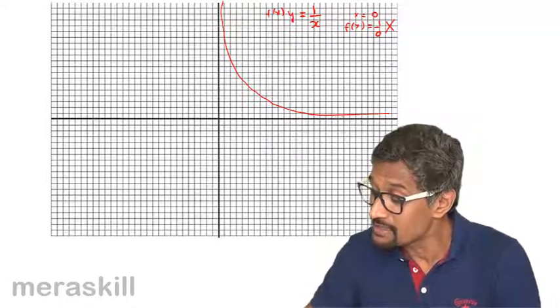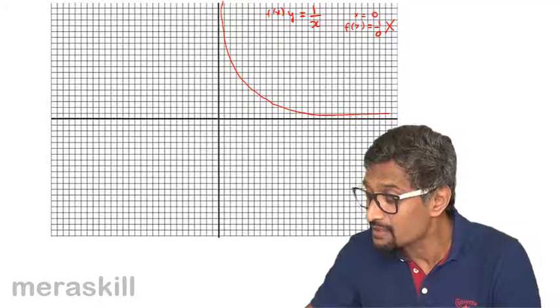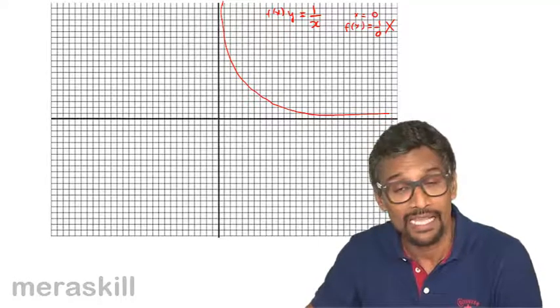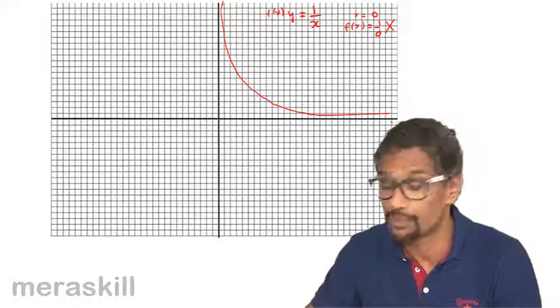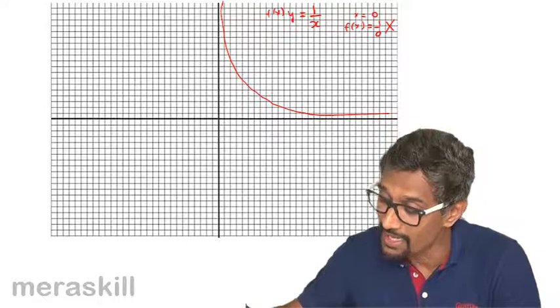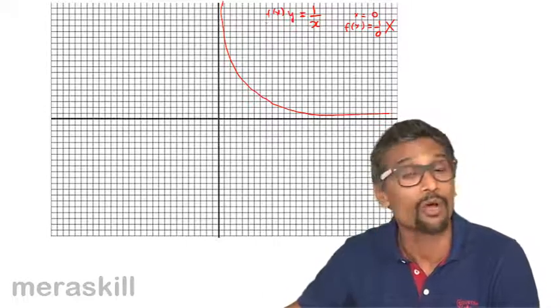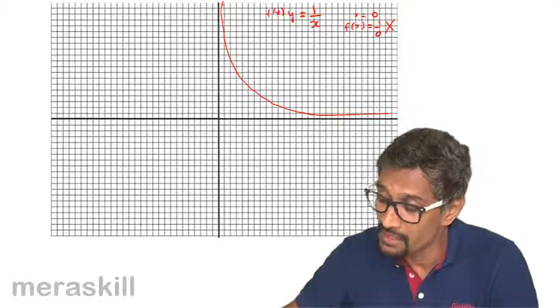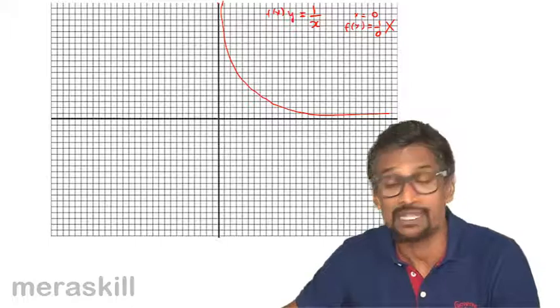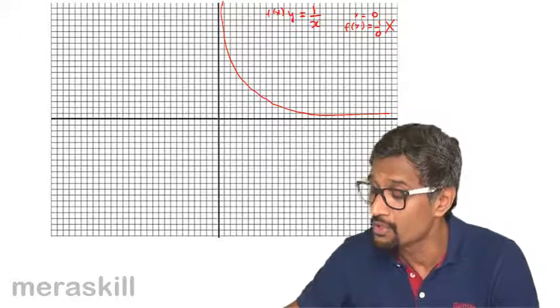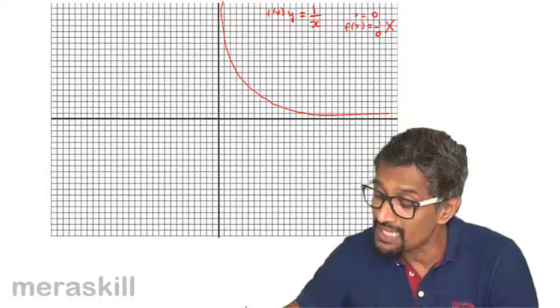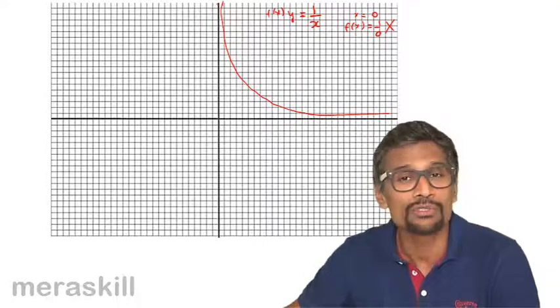In such cases, we say that X is coming closer. Because when this line touches the X axis, that means at that particular point, or if this line touches the Y axis, one of these quantities is bound to become 0. Suppose this curve touches the Y axis, that means X is 0. And if X is 0, this entire expression becomes meaningless.